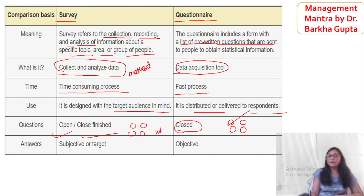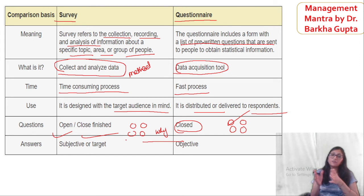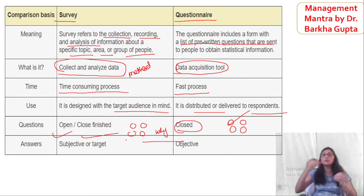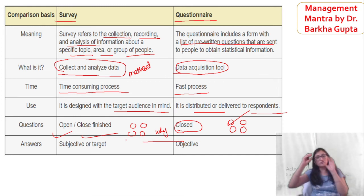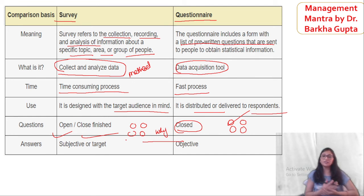In the survey you can also get closed and open questions, so you can also get descriptive answers. The survey and the questionnaire — the questionnaire is subjective or targeted, but in the survey you can also get objective answers. Keep in mind: the questionnaire is a small tool, but the survey is a whole process used in market research basically to collect, record, and analyze data.